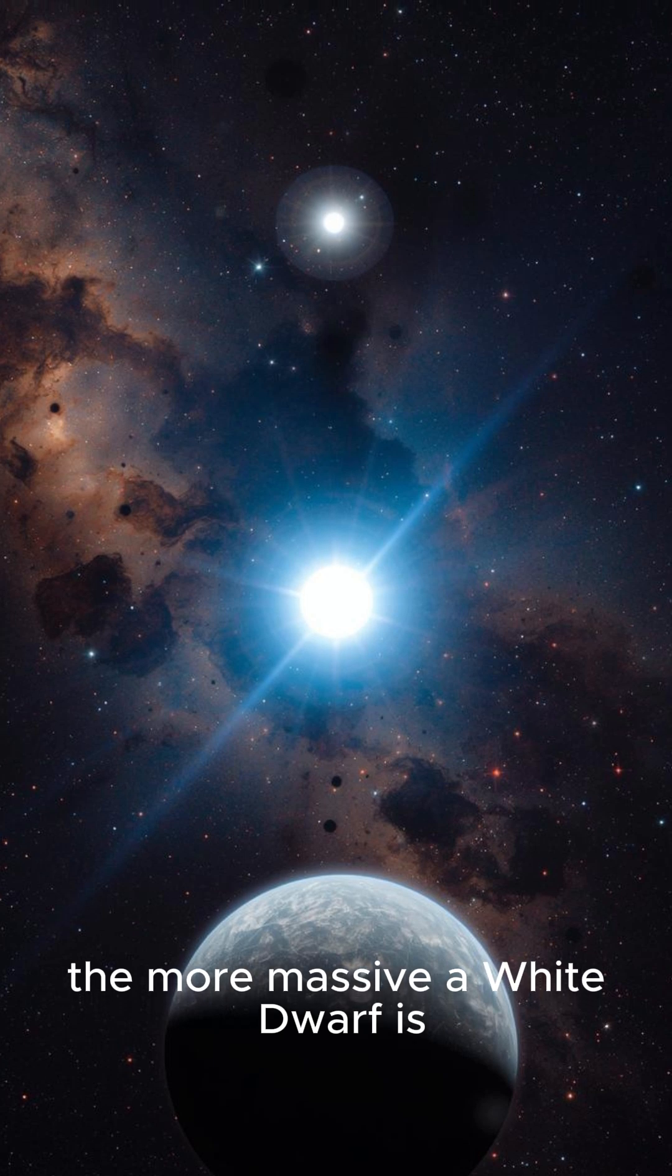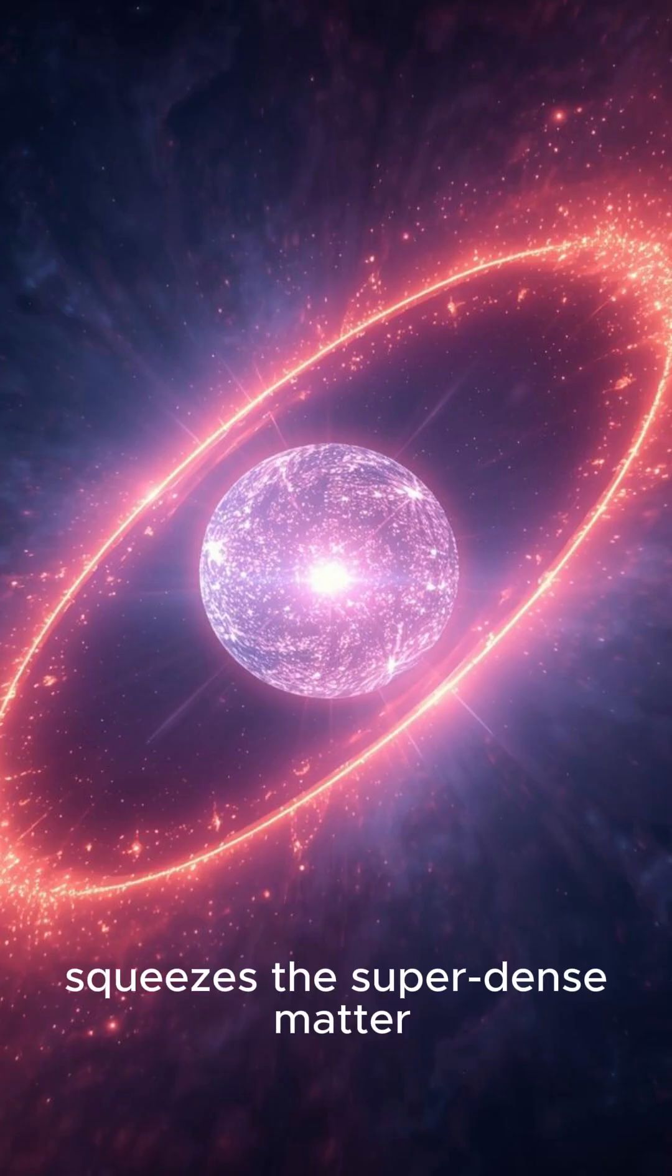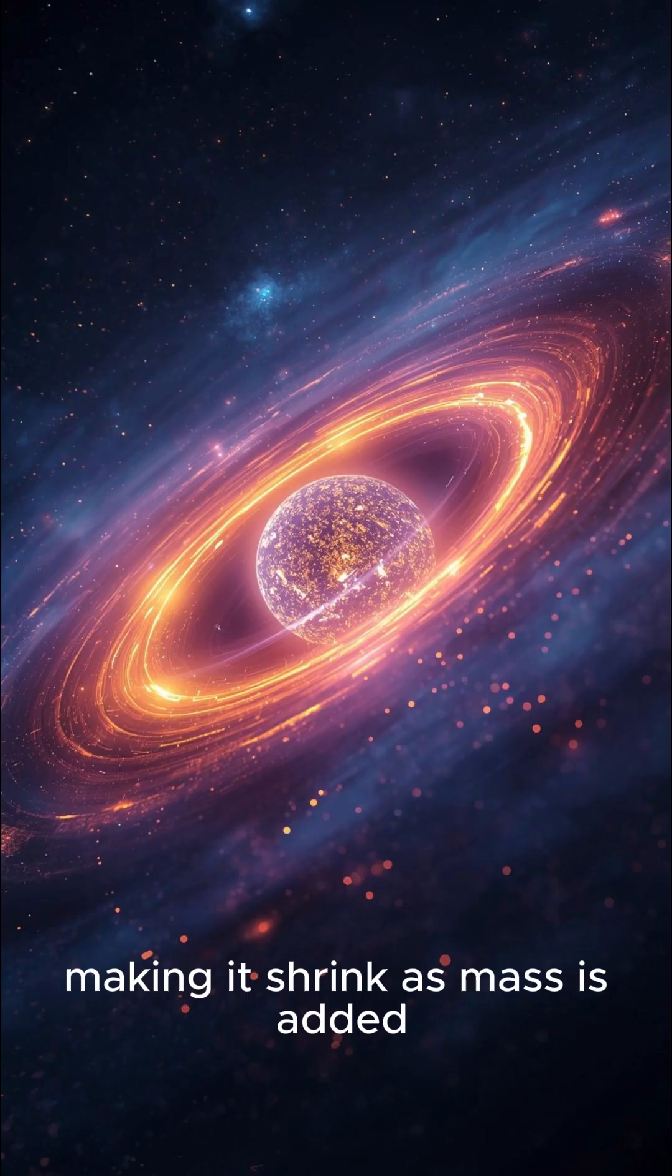Second is, the more massive a white dwarf is, the smaller it gets. Gravity squeezes the super dense matter, making it shrink as mass is added. Third is,